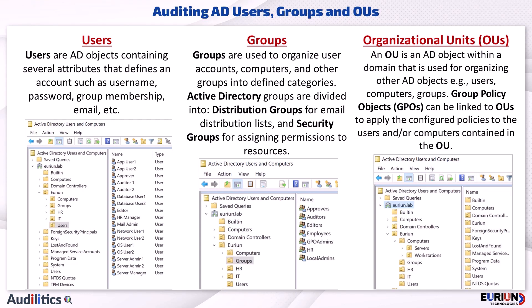An Organizational Unit, or OU, is an AD object within a domain used for organizing other AD objects — for example, organizing users, organizing computers, or organizing groups. Group Policy Objects can be linked to OUs to apply the configured policies to the users and/or computers contained in the OU.